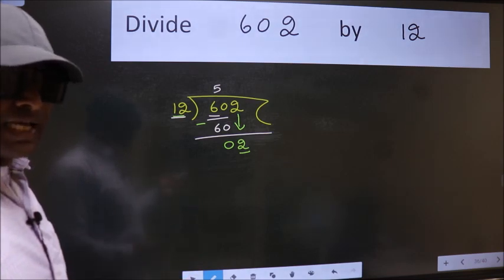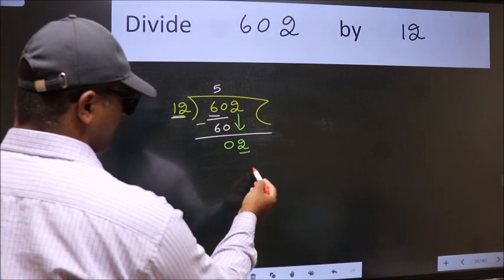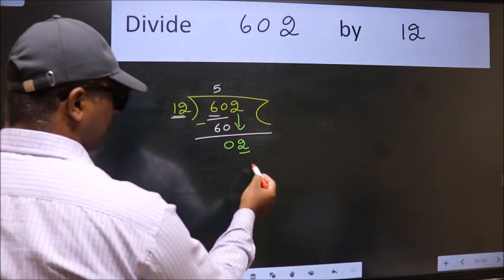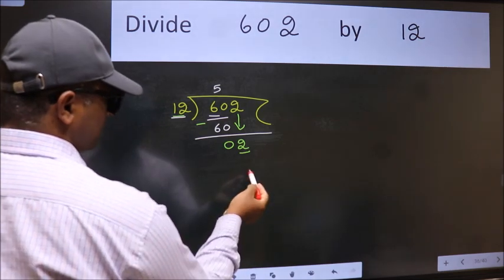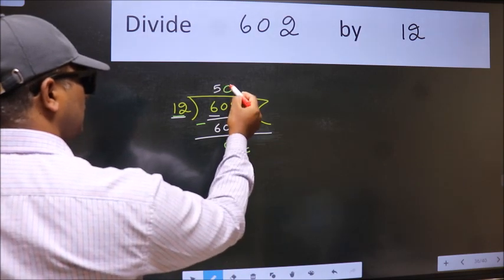Instead of that, what we should think of doing is which number should we take here. If I take 1 we will get 12. But 12 is larger than 2. So what we do is we take 0 here.